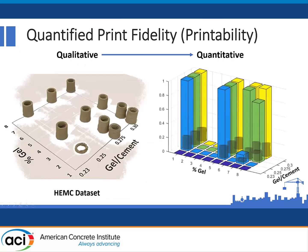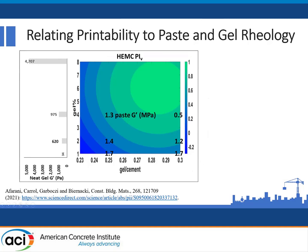We can look at this in a different way: taking the qualitative information and quantifying it using one of our indices — presented as bar graphs or a surface plot. We can also begin to superimpose quantitative printability information on top of rheological information, where we use the storage modulus of the neat gel and the storage modulus of the paste made from those gels. What we find is that as the storage modulus of the neat gel increases, the storage modulus of the paste actually decreases. Superimposing these in juxtaposition, we can begin to see domains of rheological preference for our paste in accordance with preferred or better printability.